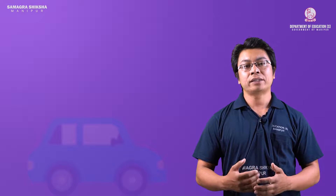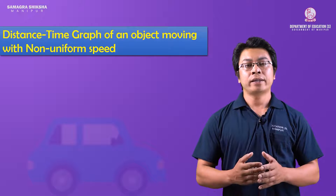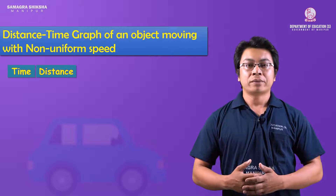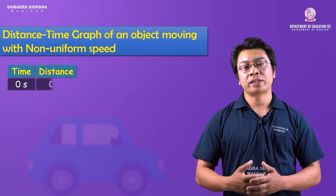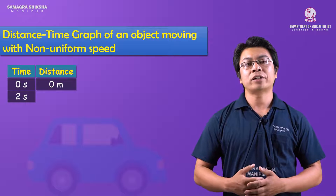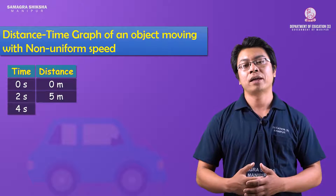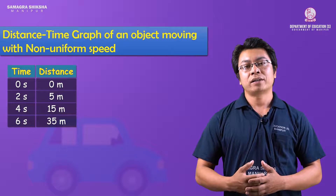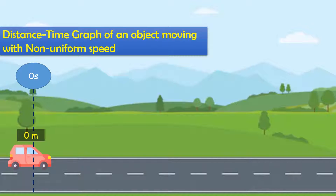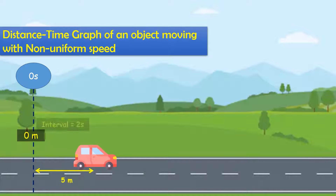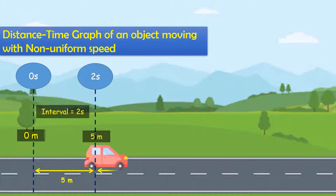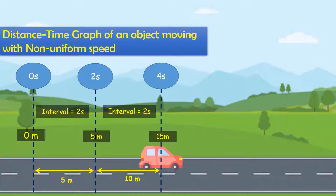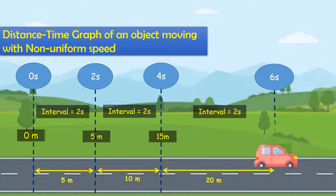Next, the distance-time graph for non-uniform speed. From the table: at time 0 seconds, distance traveled is 0 meters. At 2 seconds, distance traveled is 5 meters. At 4 seconds, distance traveled is 15 meters. At 6 seconds, distance traveled is 35 meters. In equal intervals of 2 seconds, the distance traveled is unequal — from 0 to 2 seconds: 5 meters; from 2 to 4 seconds: 20 meters. So the body's speed is non-uniform.